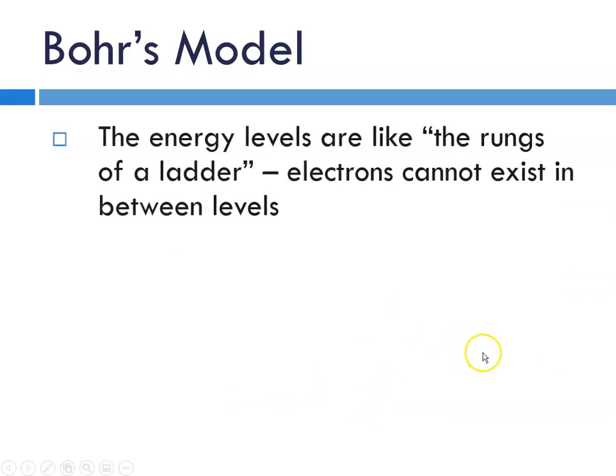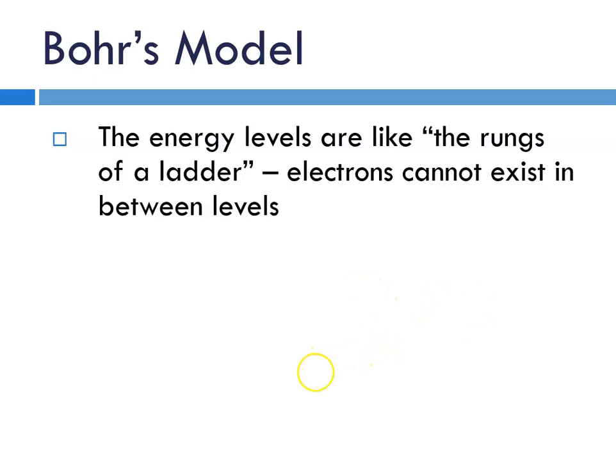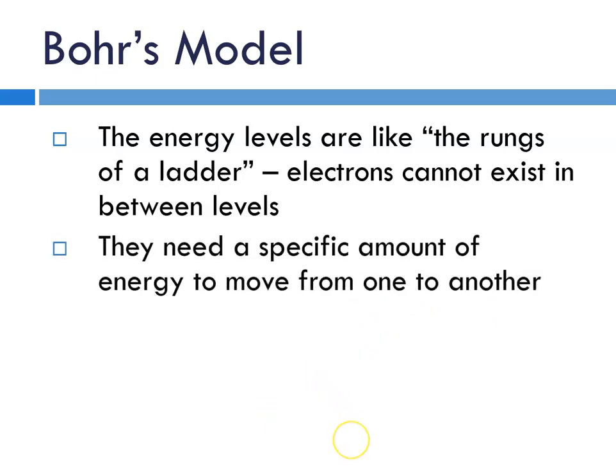And they have to have this specific energy, which is why they don't fall into the nucleus. And again, his model is called the planetary model. And according to the Bohr model, the energy levels are like the rungs of a ladder. And again, electrons were thought to not exist in between the levels. They need this specific amount of energy to move from one level to another.